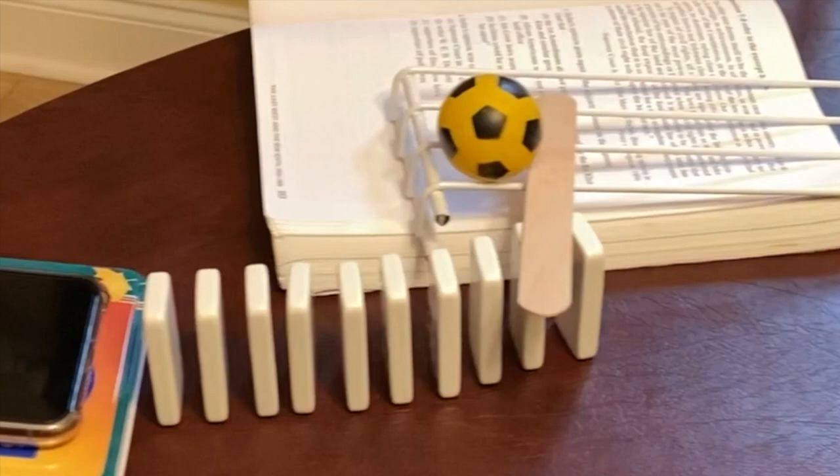However, once the final domino falls, the torques become unbalanced, for the normal force of the domino that originally existed on the right side of the popsicle stick is no longer there. Therefore, the normal force of the ramp pushes up on the left side of the popsicle stick and the force of gravity pulls down on the right side of the popsicle stick, resulting in a clockwise torque.